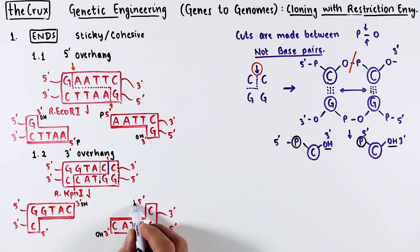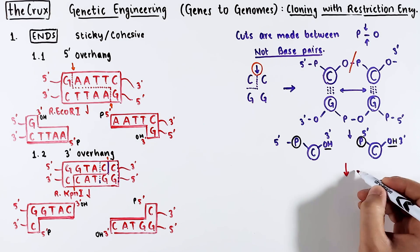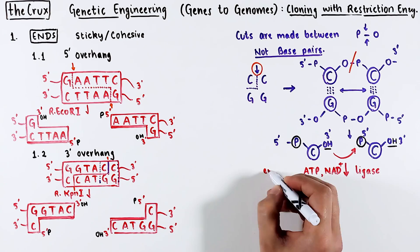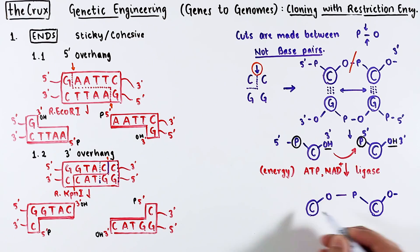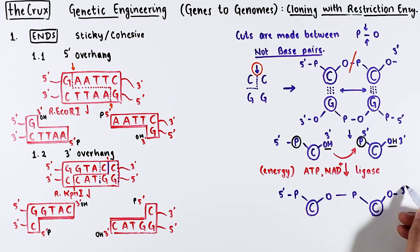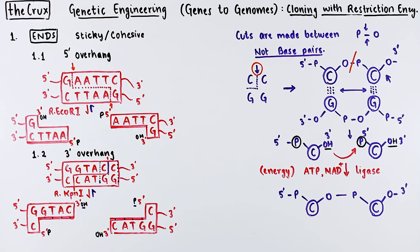When you add a ligase, the hydroxyl and phosphate are brought together using some form of energy source to reconstruct the phosphodiester bond. This reversion to the original rectangle from the L-shaped end is the reversibility in molecular cloning. The base pairing is done by the L-shaped ends, and the joining is done by the hydroxyl and the phosphate.